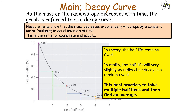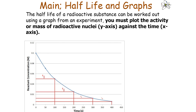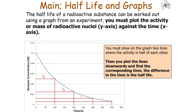It is best practice to take multiple half-lives from your graph and find an average. To clarify: the half-life of a radioactive isotope can be worked out from a graph by plotting activity, mass of radioactive nuclei, or count rate on the y-axis against time on the x-axis. Draw two lines where the activity values are half of each other, find the corresponding times, and the difference in times is the half-life.